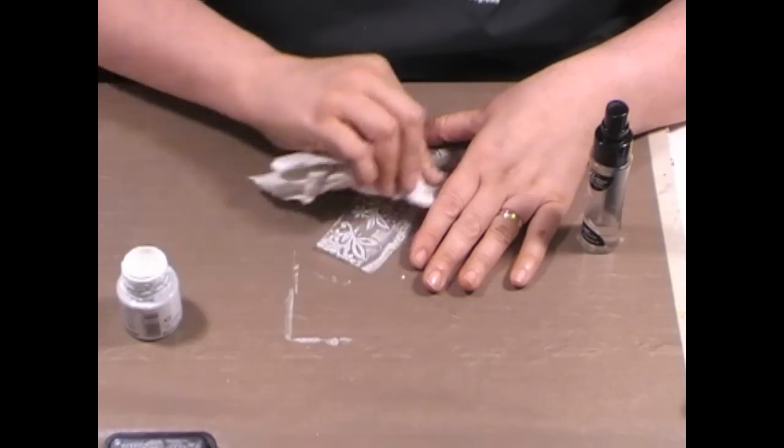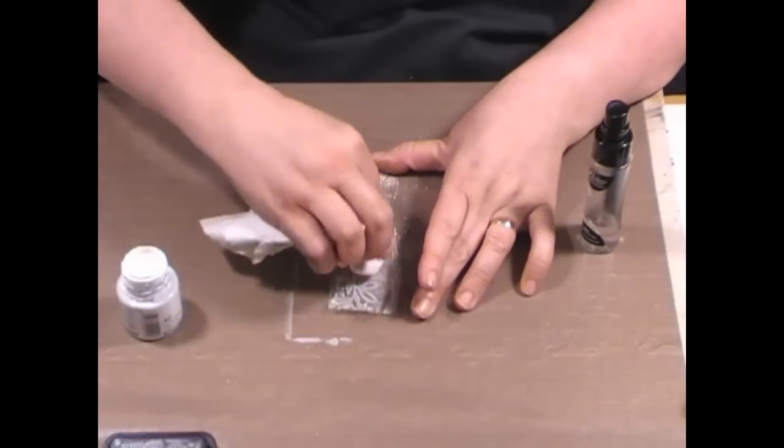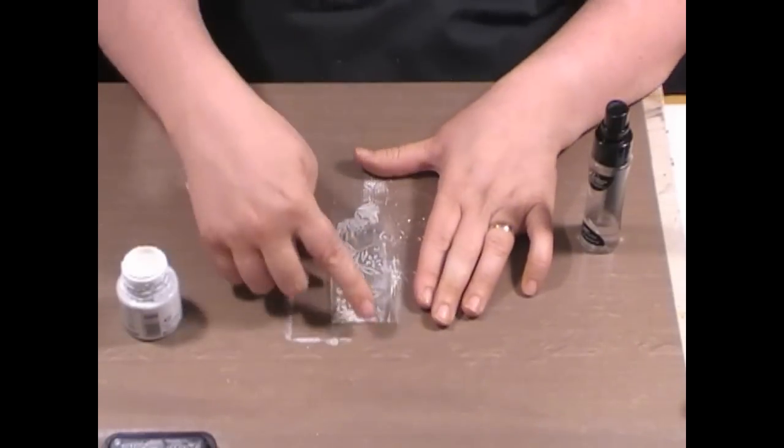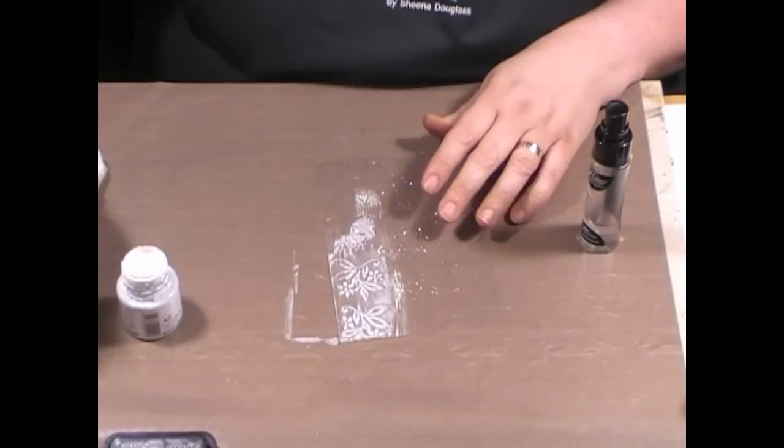If it's not coming off, if it's dry already, just dampen your paper towel. I like it if you've got a little bit of the paint left behind, to be honest, where it's a little bit streaky. I really like that little grainy look.